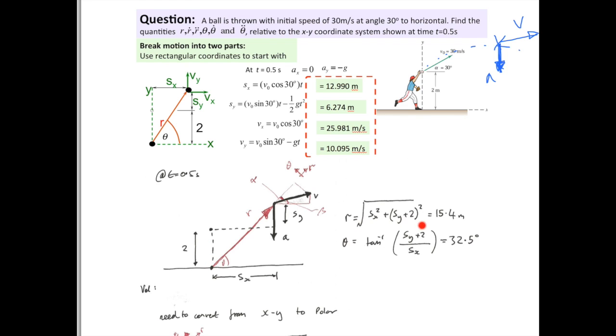So, our R is 15.4 meters and our theta, so it's the inverse tangent of this height, which is Sy plus 2, divided by Sx. And, this gives us just over 30 degrees.